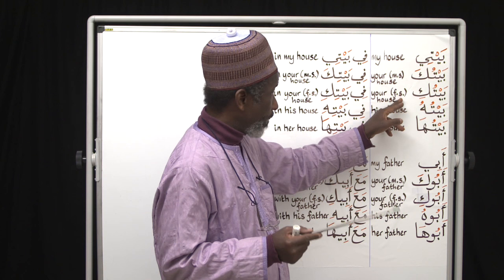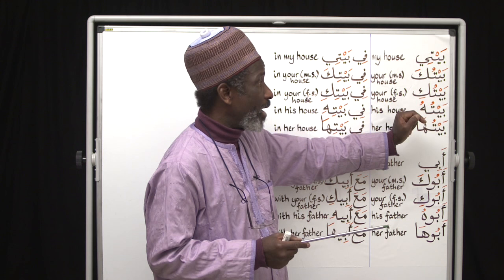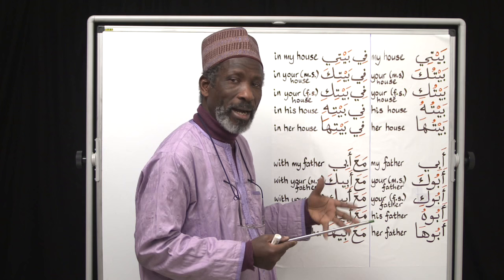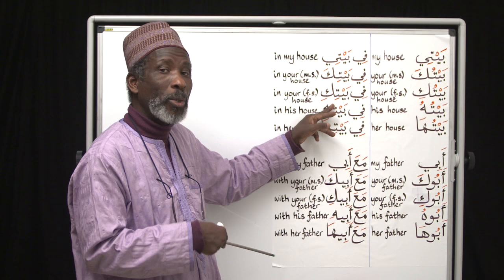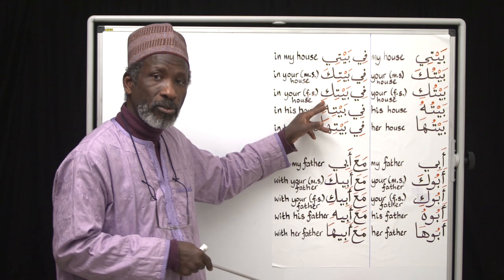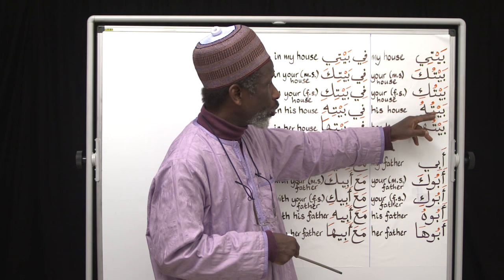Baituki means 'your house', feminine singular. You can see baitu keeps its original case ending when there is no preposition, but with the preposition fi, it changes: fi baiti ends with kasra because of fi. So fi baitiki means 'in your house', addressing a single female.